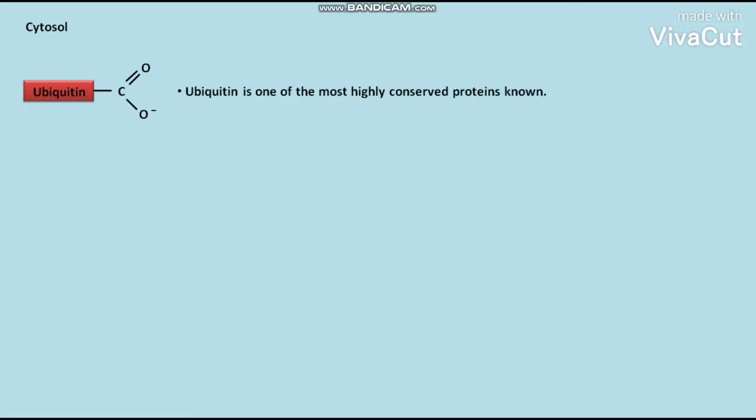Ubiquitin is one of the most highly conserved proteins known. The ubiquitin consists of 76 amino acids.